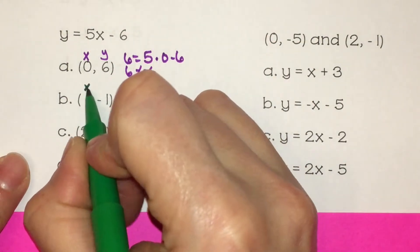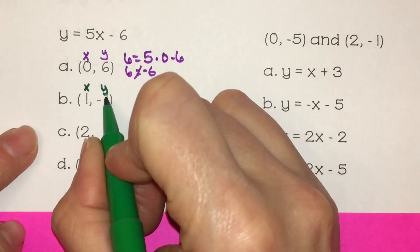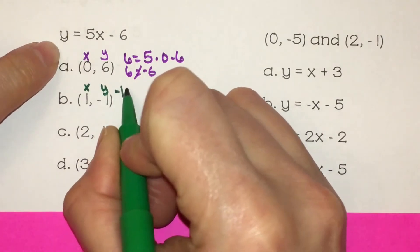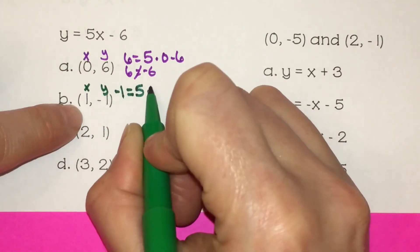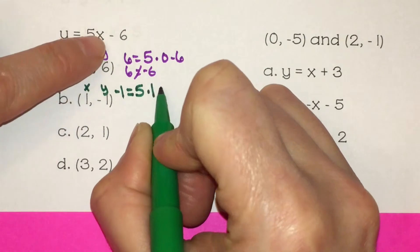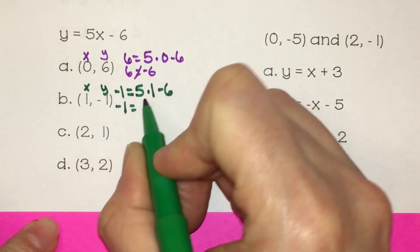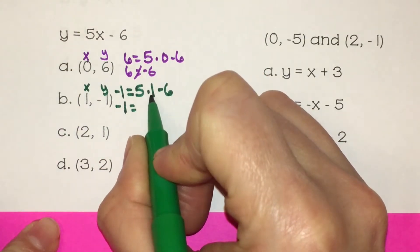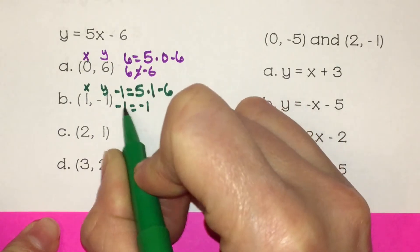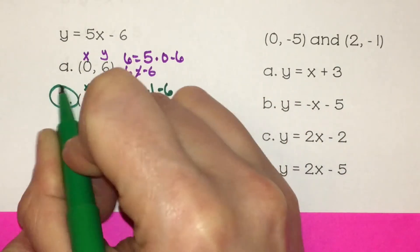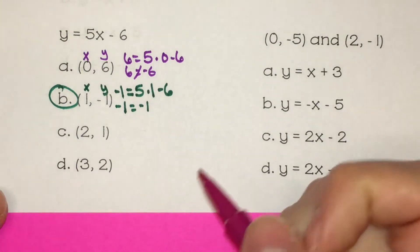I'm going to plug in 1 for x and negative 1 for y. So y is negative 1 equals 5 times our x value which is 1, minus 6. We have negative 1 equals 5 times 1 is 5, and 5 minus 6 is negative 1. The two sides are equal, so I know that one works, and I'm just going to keep going through all of them.